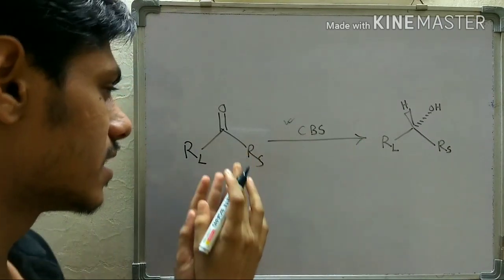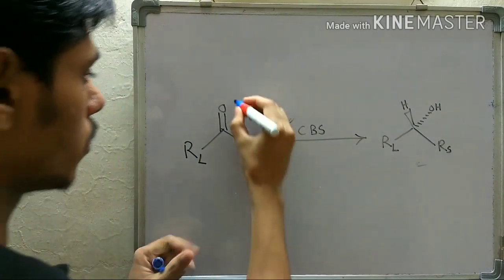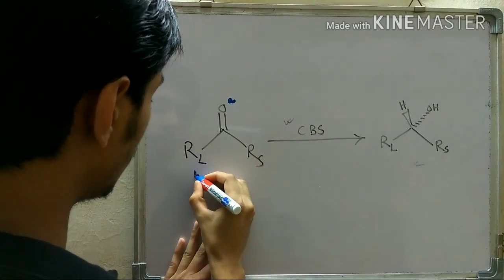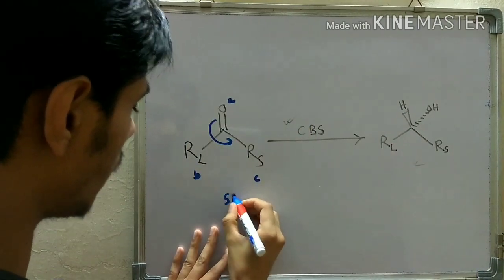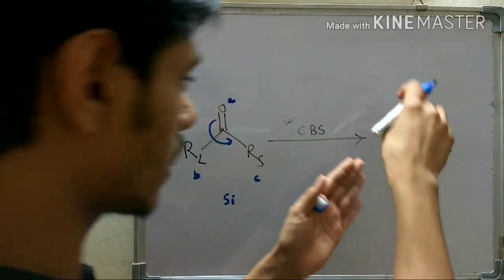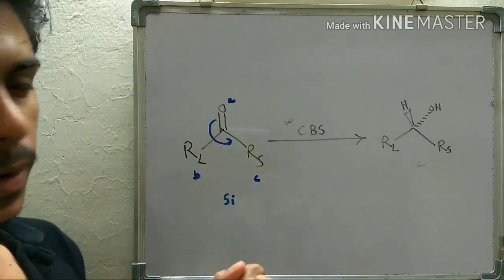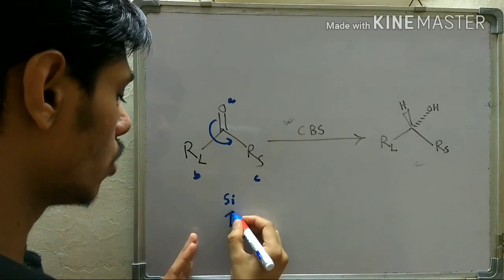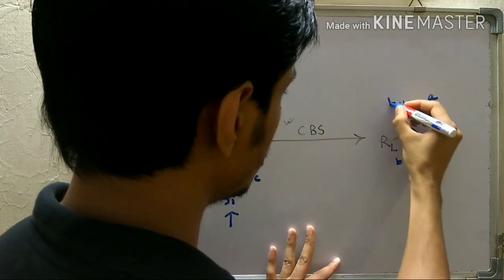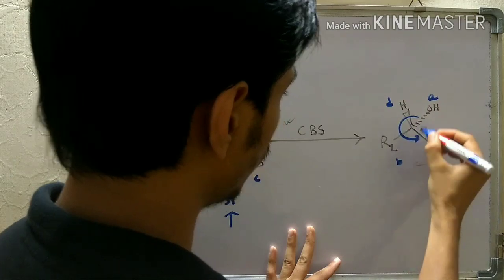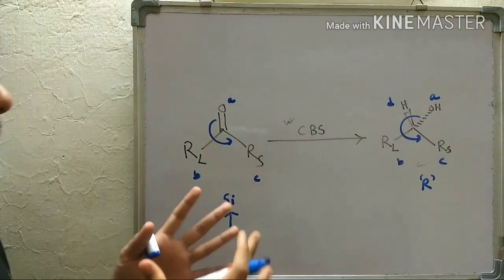This is why we design the Corey-Bakshi-Shibata reagent, which gives selective reduction and yields this product. If you identify the two faces of this compound using CIP nomenclature: groups A, B, C are arranged anticlockwise, so the top face is the Si-face and the bottom face is the Re-face. The hydride is attacking on the top (Si) face. Whenever you use the CBS reagent, attack always takes place through the Si-face, giving this product. Using the nomenclature, A, B, C, D — ABC is anticlockwise but hydrogen is near to you, so this is R configuration.